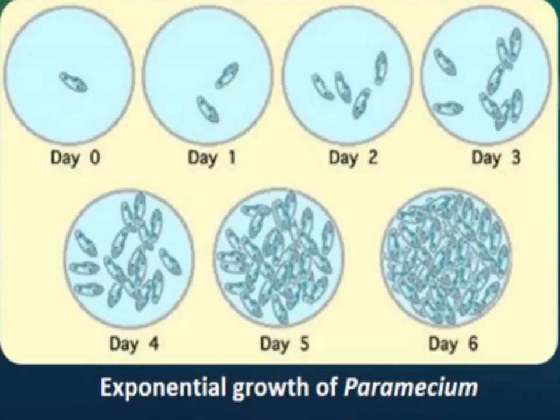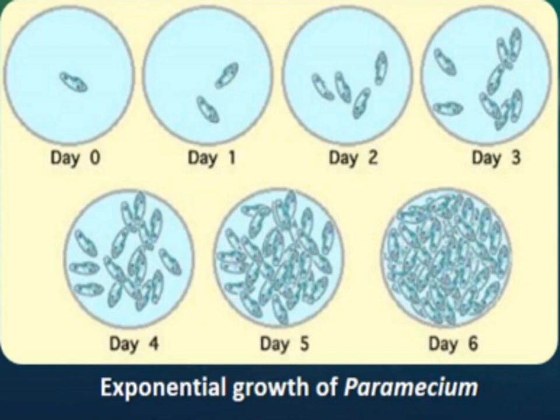Here is an example of exponential growth of Paramecium. Starting from day 0 with one organism: on day 1 it becomes 2, day 2 it becomes 4, day 3 it becomes 8, doubling each day. On day 4, 5, and 6 the number keeps doubling. So in 6 days, with this geometric rate of growth, the Paramecium shows exponential growth.